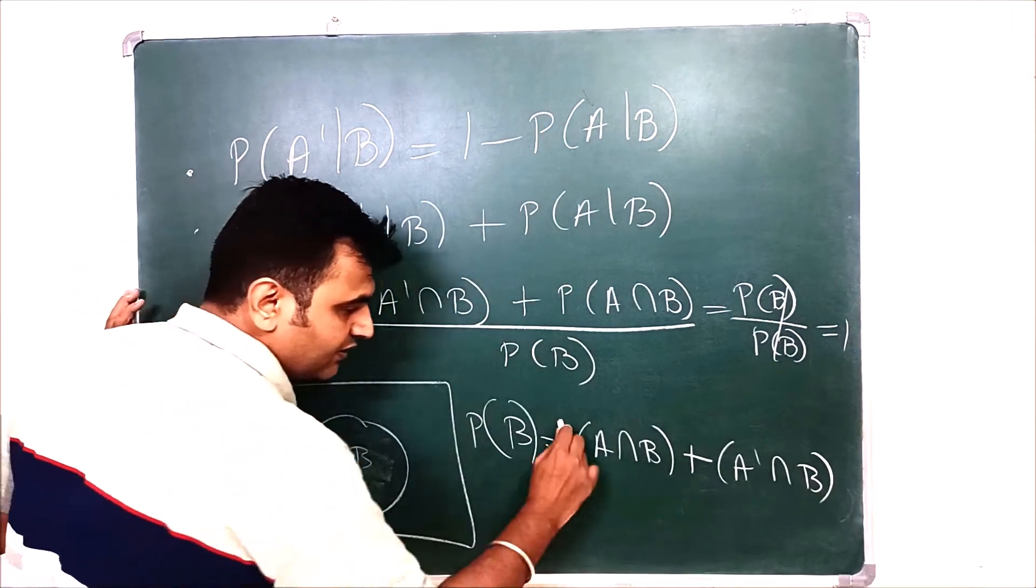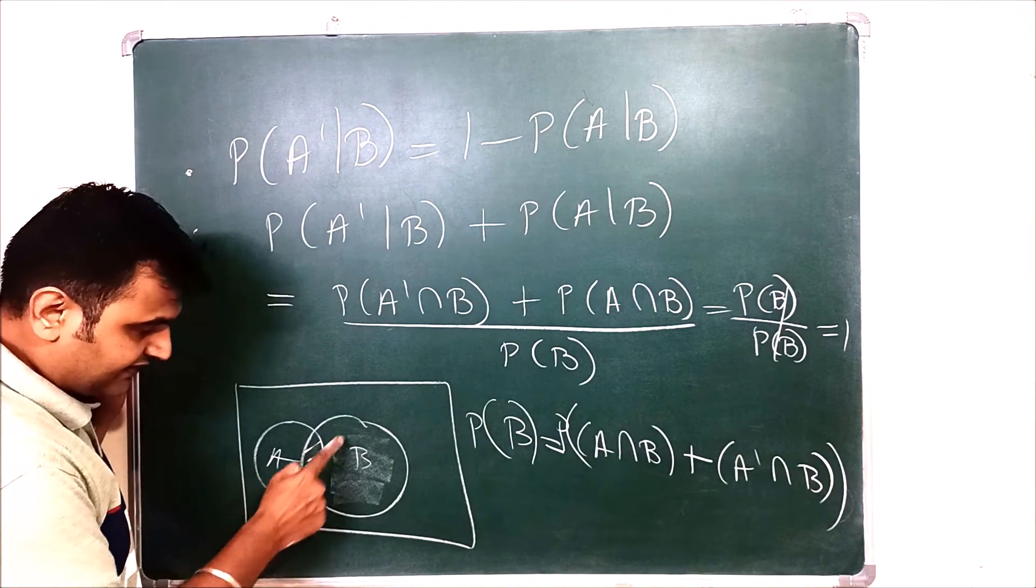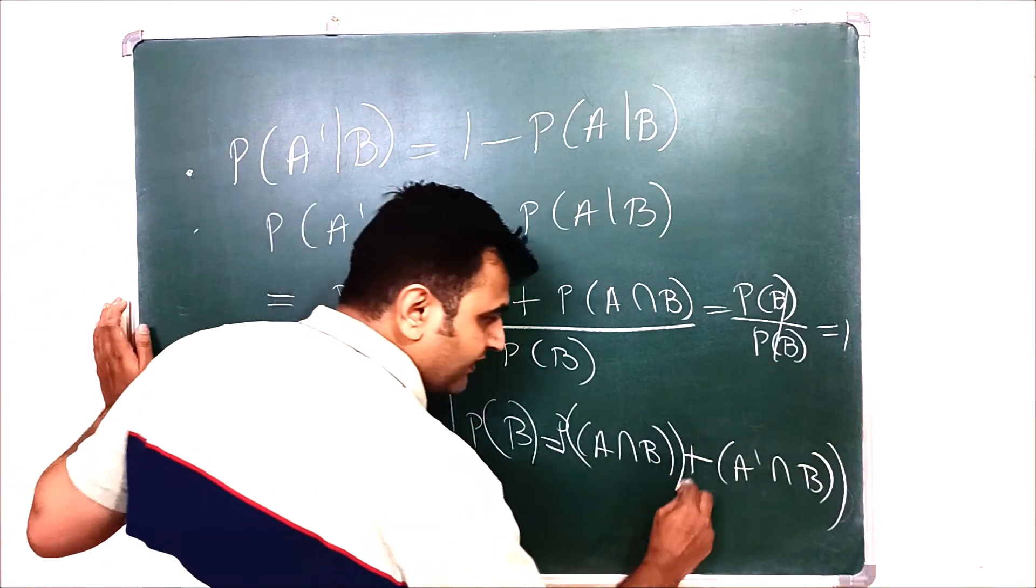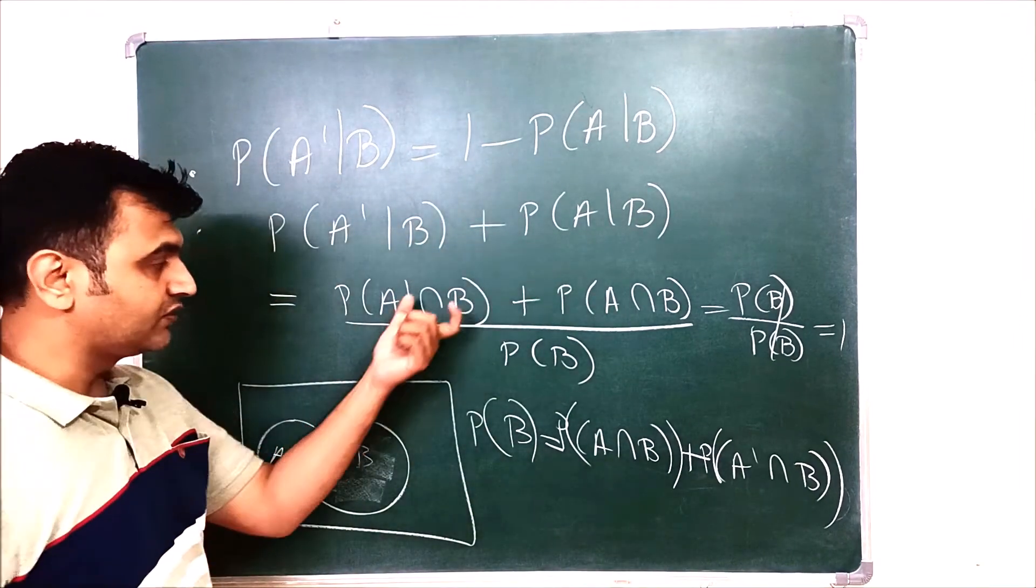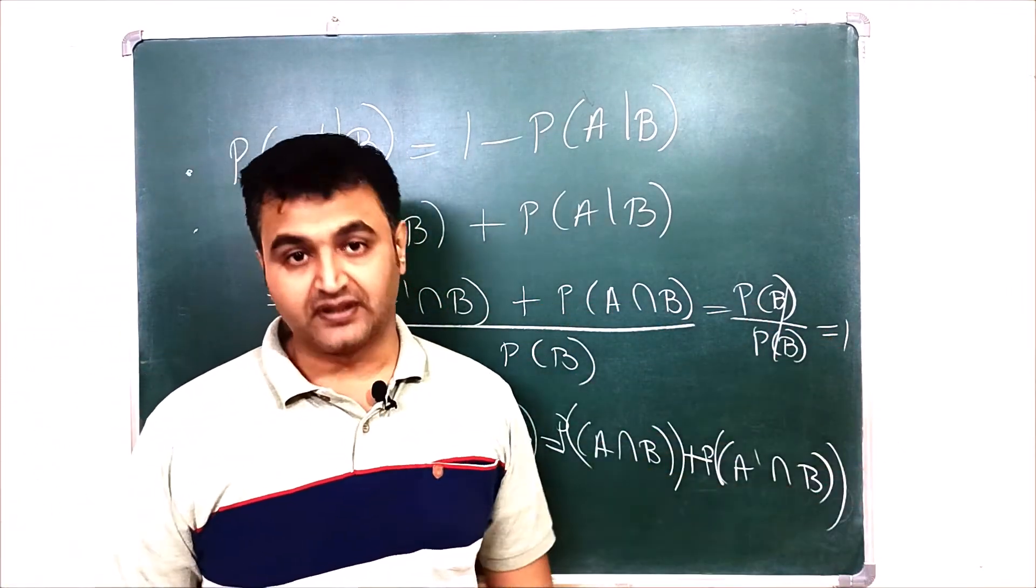Now you take probability on both sides. But these are disjoint union. This is disjoint with this. So probability gets split. So this plus this is nothing but probability of B. So you have the answer to be one.